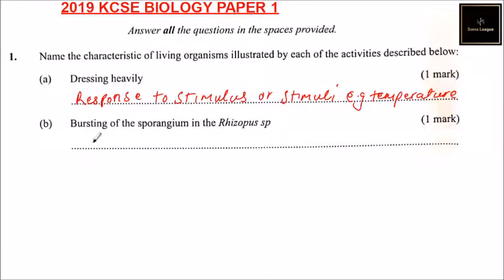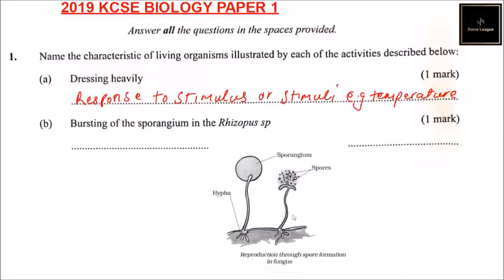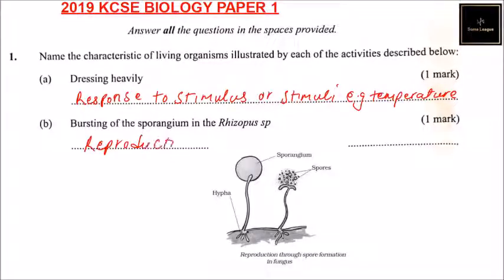Part B — bursting of sporangium in Rhizopus species. Rhizopus is a fungus. The sporangium, once it bursts, spores are released. So bursting of sporangium in Rhizopus species is a form of reproduction. If you answer that, you will be able to get two marks.